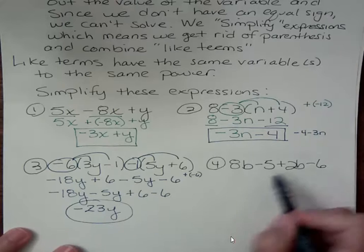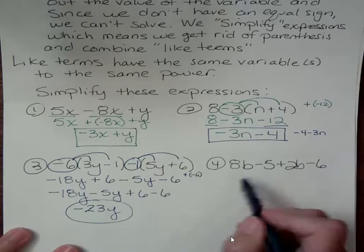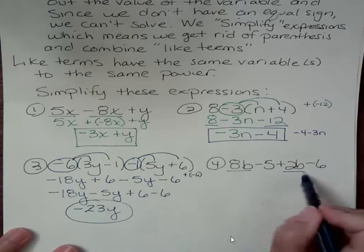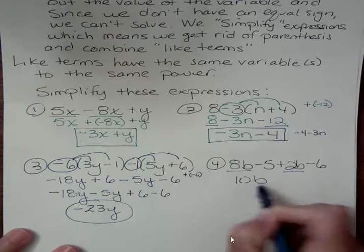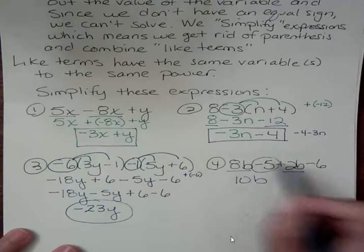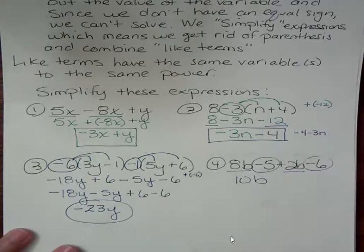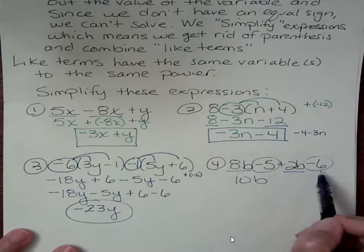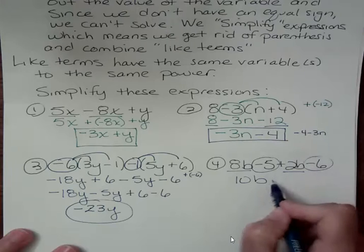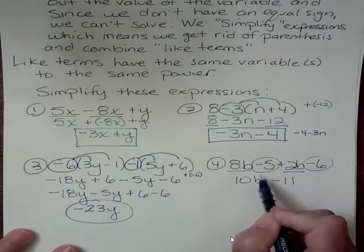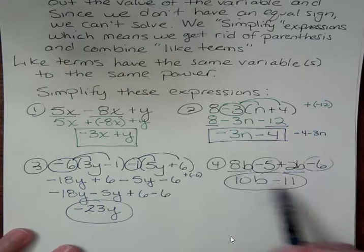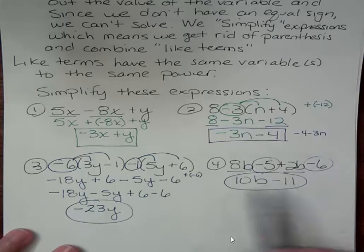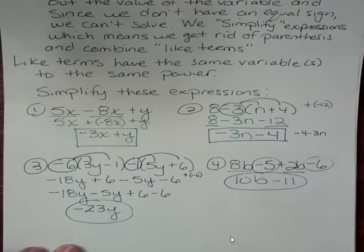And now I'm going to combine like terms here. I've got 8b and 2b. I have 8 and I add 2 more. I get 10. And I have negative 5 and negative 6. Those are both like terms both constants. 5 negatives and 6 more negatives and that's going to be a negative 11. And that's complete because this b cannot be added on to this term. There's no b here so they're not like terms. And that's as far as I can go.